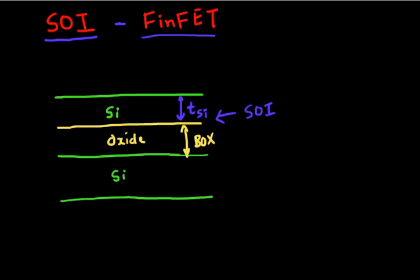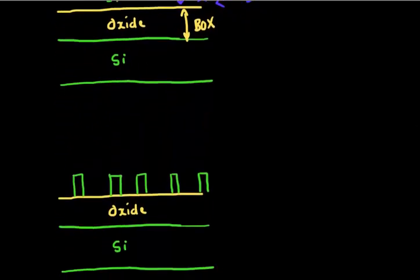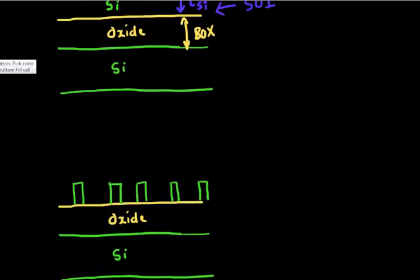Then again, you can have your spacer and your hard mask and pattern those in here. Then you pattern this silicon or SOI substrate. What you are left with are essentially fins which are now standing on top of your oxide.